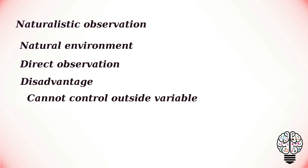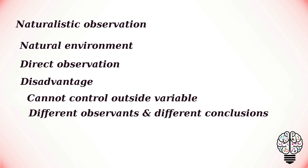Some of the disadvantages of naturalistic observation include the fact that it can be difficult to determine the exact cause of a behavior, and the experimenter cannot control outside variables. Different observers may also draw different conclusions from the same witnessed behavior — two researchers might see the same actions yet define them differently.